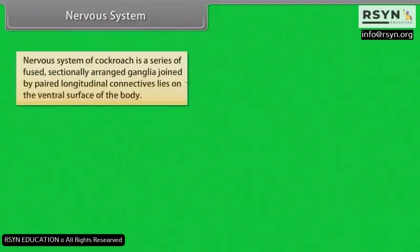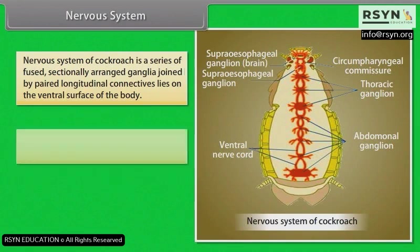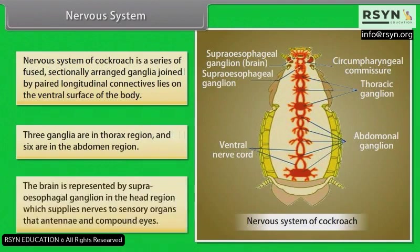Nervous System: The nervous system of cockroach is a series of fused, segmentally arranged ganglia joined by paired longitudinal connectives lying on the ventral surface of the body. Three ganglia are in the thorax region and six are in the abdomen region. The brain is represented by the supra-oesophageal ganglion in the head region, which supplies nerves to sensory organs — the antennae and compound eyes.